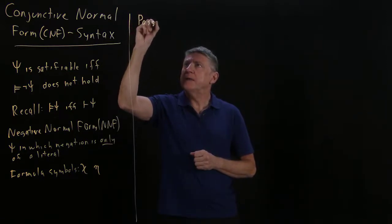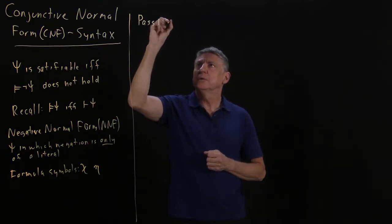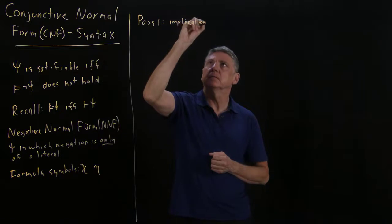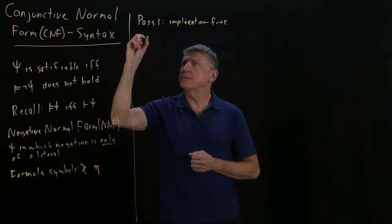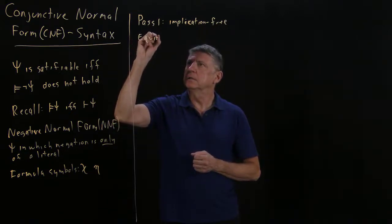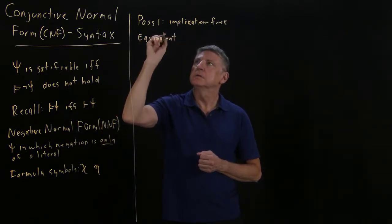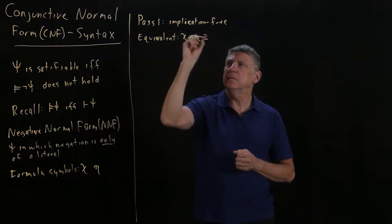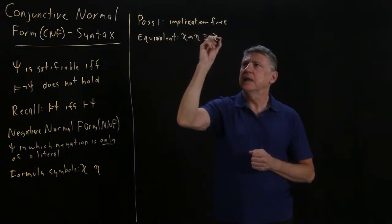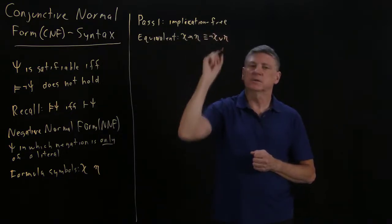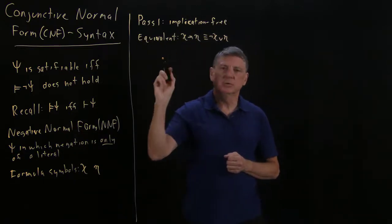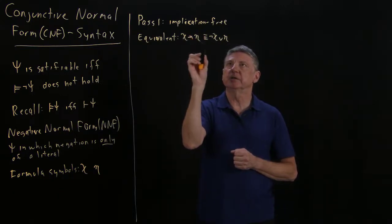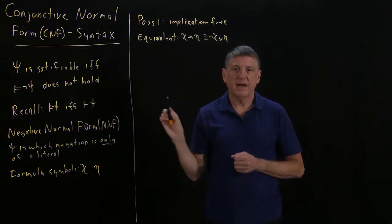In our three-pass algorithm, pass one is: get rid of implication—we'll call that implication-free. We'll use a semantic equivalence: formula chi implies formula eta is equivalent to negating the antecedent and forming a disjunction with the consequent. This will take any formula in propositional terms and replace all implications with this disjunction, making the formula implication-free.